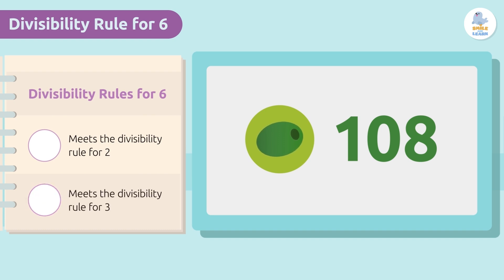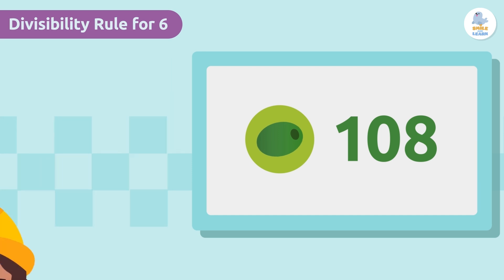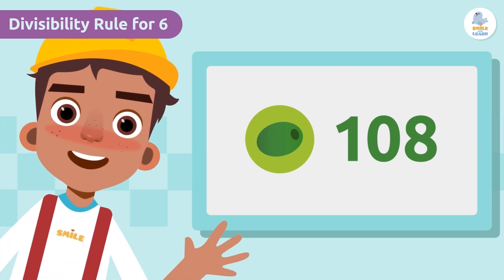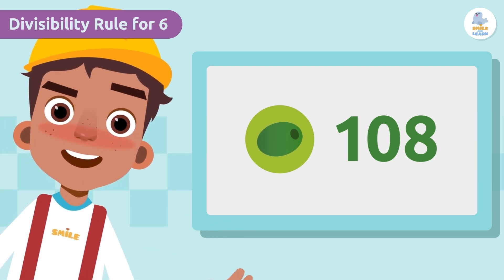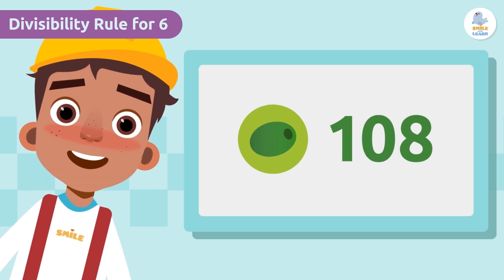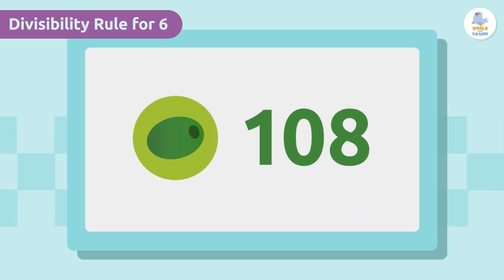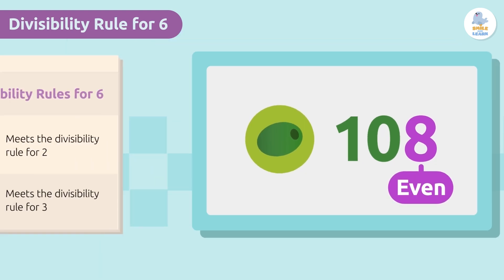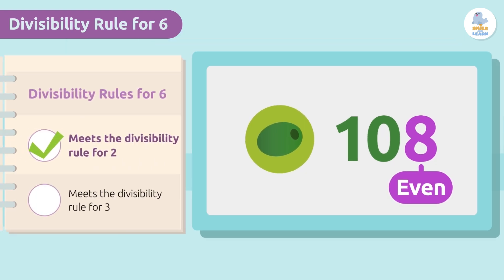Let's start with the rule of two. Windsor explained how to apply the divisibility rule of two. We have to check if the last digit is even. Our number ends in eight, which is an even number, so the rule of two is met.